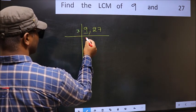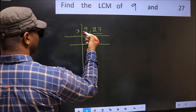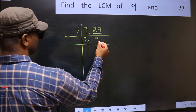9 is 3 times 3 is 9. The other number 27, when do we get 27 in the 3 table? 3 times 9 is 27.